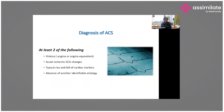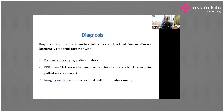To diagnose acute coronary syndrome, at least two of the following are required: history of angina or angina equivalents, acute ischemic ECG changes, typical rise and fall of cardiac markers, and absence of another identifiable cause of injury. Diagnosis requires a rise and/or fall in serum cardiac markers, preferably troponin, together with symptoms, ECG changes, or imaging evidence of new regional wall motion abnormality.